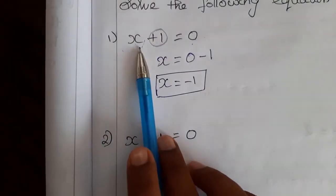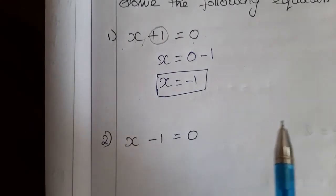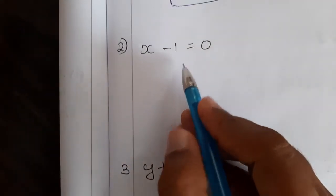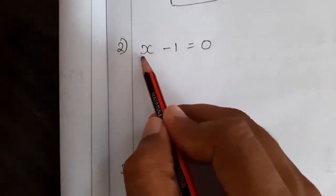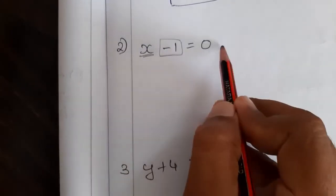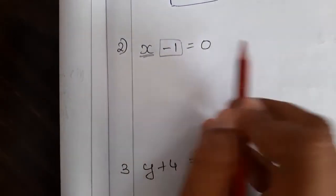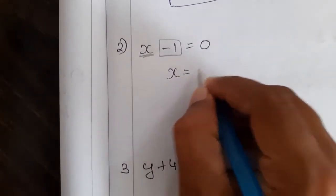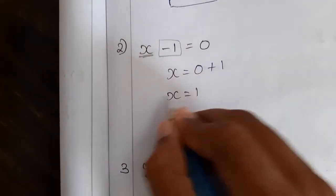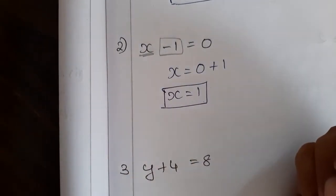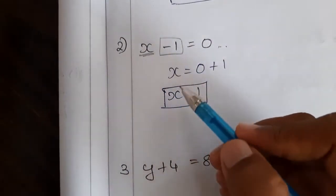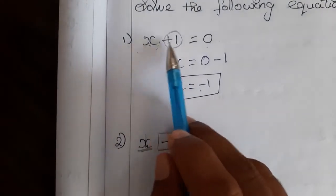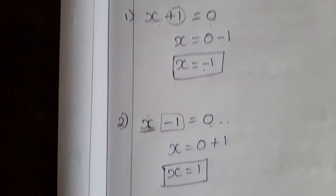Our aim is to find the value of x — the plus 1 we are transposing will become minus 1. Next problem: x minus 1 is equal to 0. Here also our aim is only to find the value of x. Let me transpose this minus 1 to the other side — minus 1 will become plus 1. So x is equal to 0 plus 1, which is 1. You can check: substitute 1 here — 1 minus 1 is equal to 0. You will get a perfect solution.